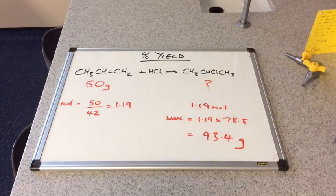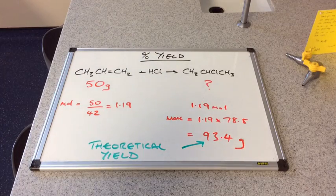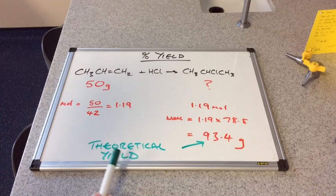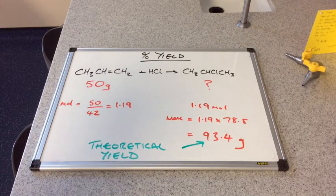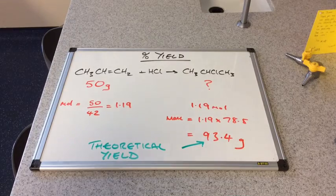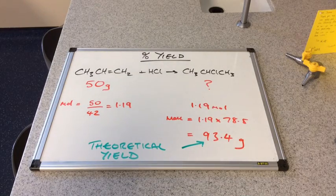Hopefully you've got that right. Now this 93.4 grams is what we refer to as the theoretical yield. That's assuming 100% conversion. In reality, chemical processes never actually reach the theoretical yield.